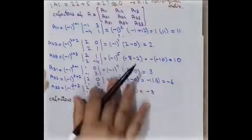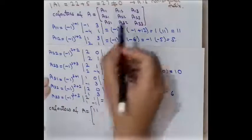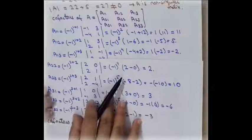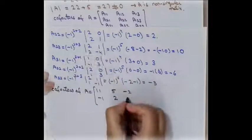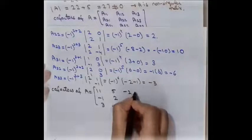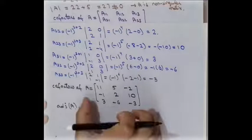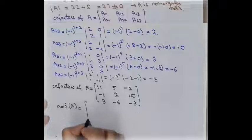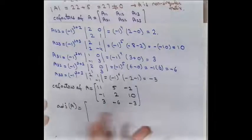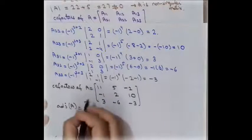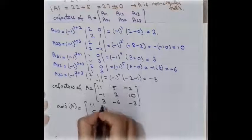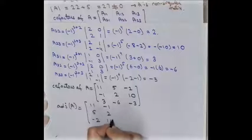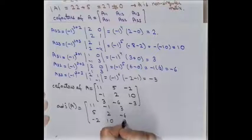The co-factors of A are: A11 = 11, A12 = 5, A13 = -2, A21 = -1, A22 = 2, A23 = 10, A31 = 3, A32 = -6, A33 = -3. To find the adjoint of the matrix, we simply transpose this co-factor matrix — interchanging rows into columns. The first row becomes the first column, and the second row becomes the second column after transposition.